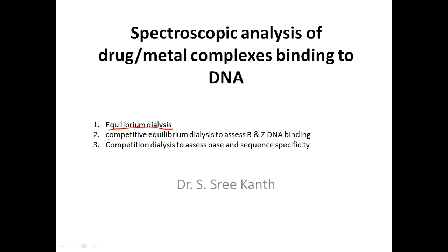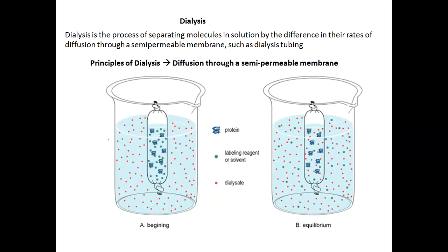What is equilibrium dialysis? Dialysis is a natural phenomena — a process of separating molecules in solution by difference in the rate of diffusion through a semi-permeable membrane such as a dialyzing tube. The principle of dialysis is diffusion through a semi-permeable membrane, which only allows molecules of a particular molecular weight or size to permeate through it.